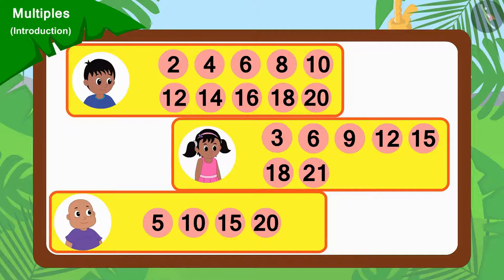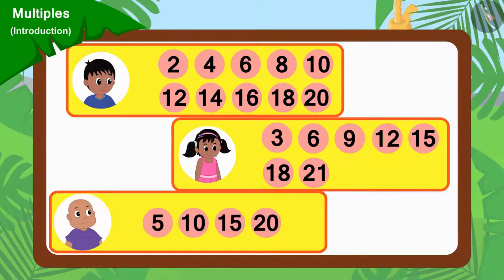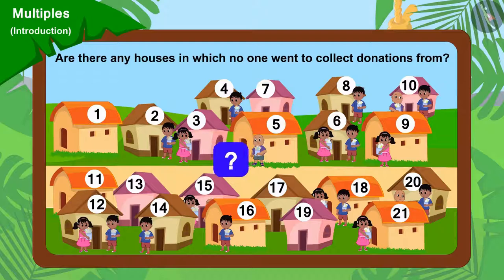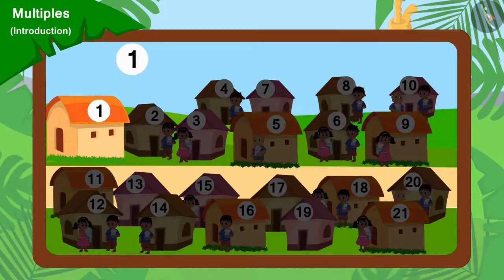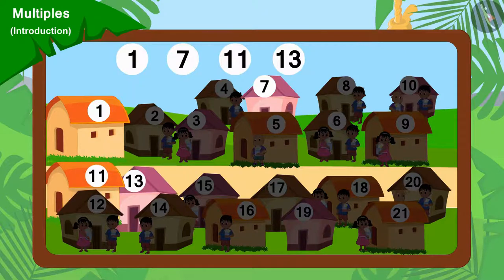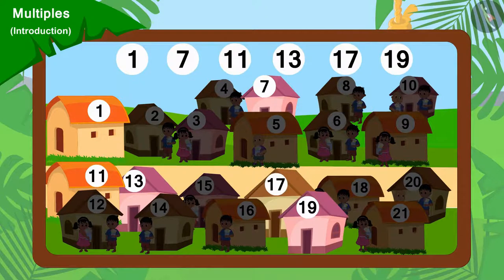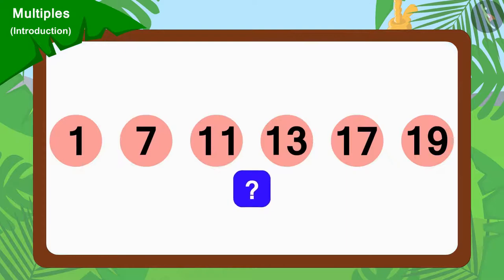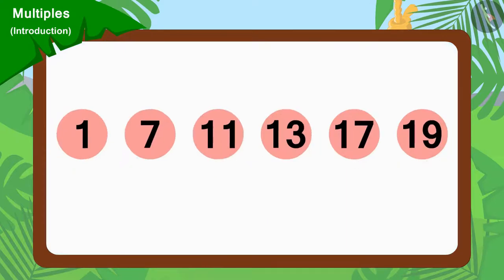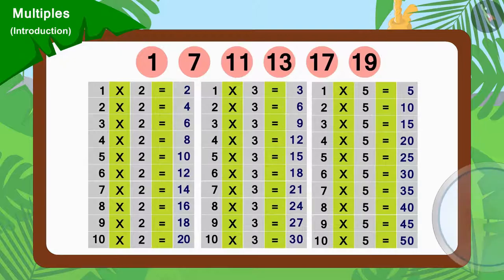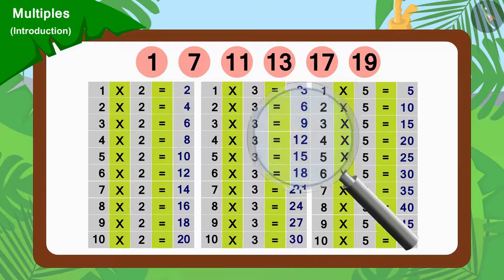Here, the numbers of the houses from where Raju, Pinky and Bablu went to collect donations from are written. Are there any houses in which no one went to collect donations from? Yes, house numbers 1, 7, 11, 13, 17 and 19 are the houses in which nobody went to collect donations from. But why did it happen? This is because these numbers cannot be divided by any of the numbers 2, 3 or 5.